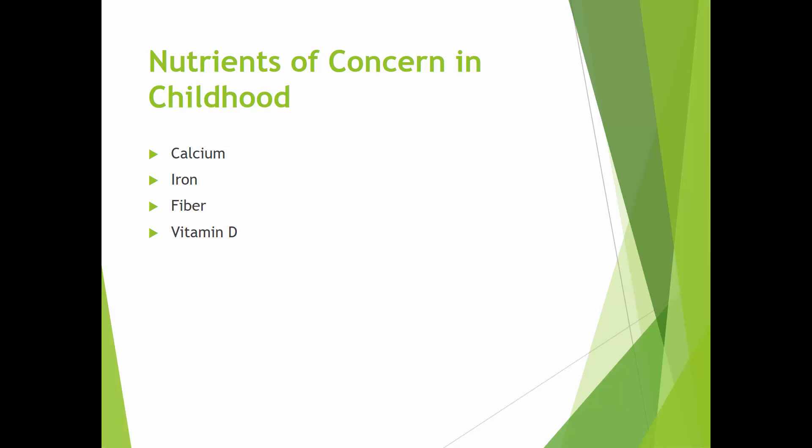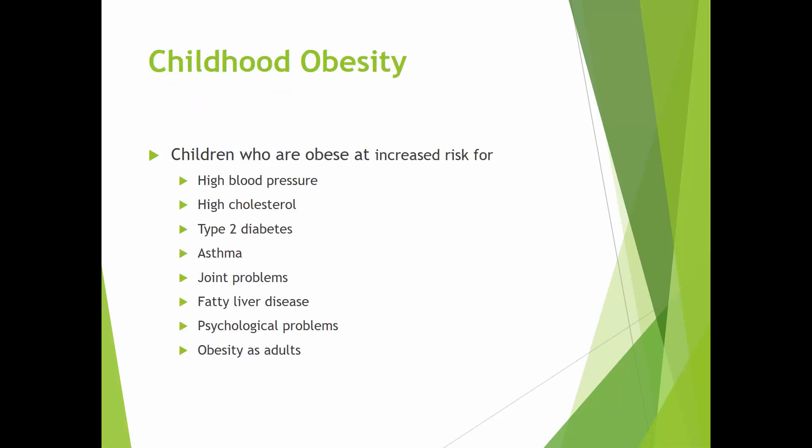Nutrients of concern during childhood include calcium, iron, fiber, and vitamin D — things children may not get enough of. Childhood obesity is also a concern: children who are obese are at increased risk for high blood pressure, type 2 diabetes, asthma, and other chronic diseases. However, weight stigma, unsupervised weight loss diets, and other uncontrolled interventions — even well-intentioned ones — can lead to disordered eating. This needs to be approached from a professional standpoint.